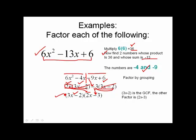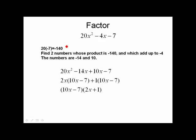One more problem. We want to factor 20x² minus 4x minus 7. Okay, first coefficient multiplied by the last term, or the last coefficient, is negative 140. We'd like to find two numbers whose product is negative 140 and they also have to add up to negative 4. The numbers have to be one negative, one positive. And I think you can see easily enough that the numbers are negative 14 and 10.